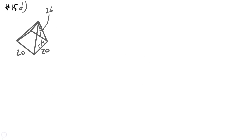15d. In this question we're looking at a pyramid shape. The base is a square, twenty by twenty units. We're given the slant height from the peak down the center of a face to the middle of the base edge, which is twenty six. We need to find the height of the pyramid, so we identify the very center of the floor of the pyramid, which is halfway along each side.